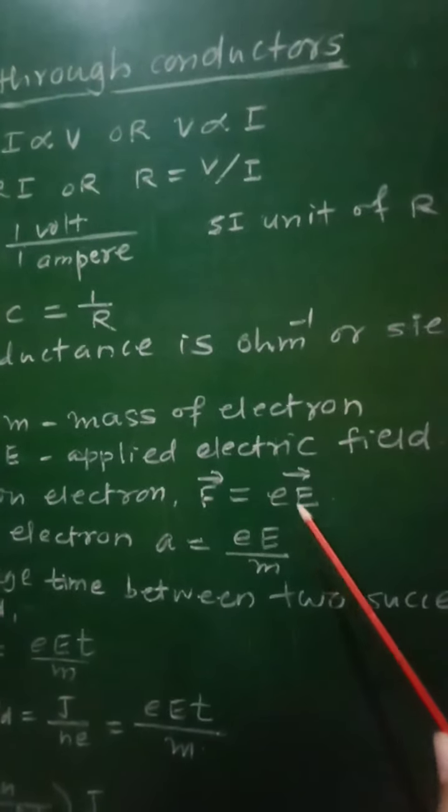Now let us see the limitations of Ohm's Law, for Ohmic and non-Ohmic devices. The devices for which the graph of potential difference V versus current I is a straight line passing through the origin, inclined to the V-axis, are called linear devices or Ohmic devices. The resistance of these devices is always constant.